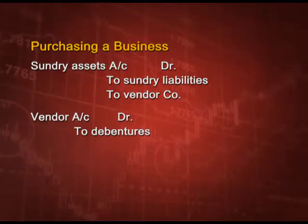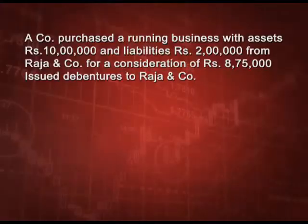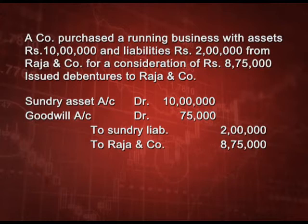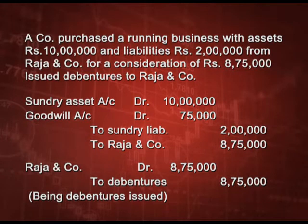The next entry is when issuing debentures to the vendor: vendor account debit to debentures, with discount debited and premium credited as applicable. For example, a company purchased a running business with assets of 10 lakh and liabilities of 2 lakh from Raja and Company for a consideration of 8,75,000 and issued debentures. Entry: sundry assets debit 10 lakh, to sundry liabilities 2 lakh and to Raja and Company 8,75,000. The difference of 75,000 on the debit side goes to goodwill. Then: Raja and Company debit 8,75,000 to debentures 8,75,000, being debentures issued.